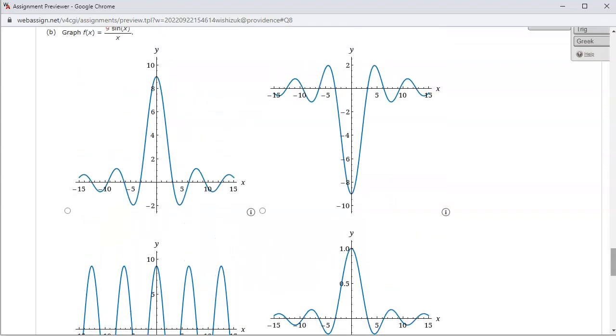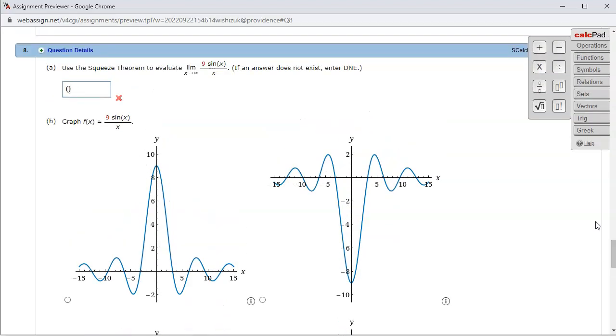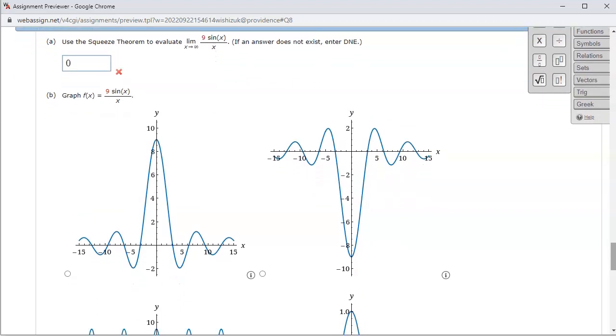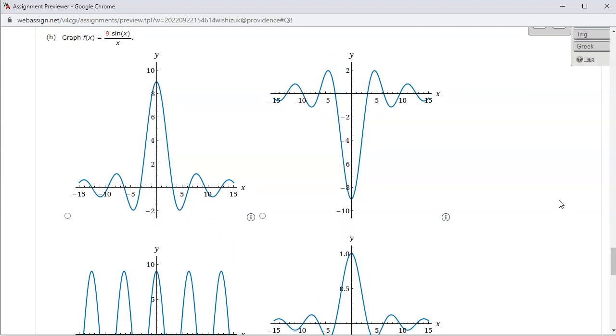third one isn't going to be it. And then how about these guys? So we want to determine, we know that as sine of x over x approaches 1 and then times 9, so it approaches 9. So y-intercept is going to be 9. So this one only has a 9 here.